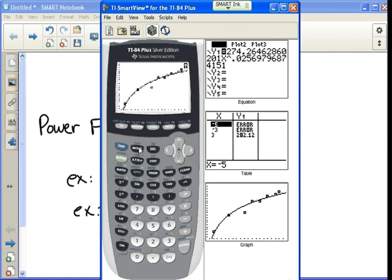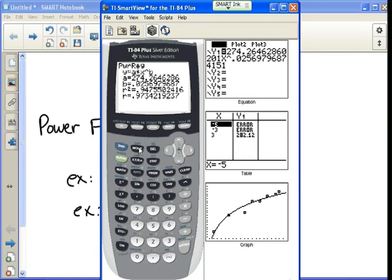So again, if we look, we would have 274.26 times x raised to the 0.025. That's an exponent we couldn't get any other way except by using the power regression.